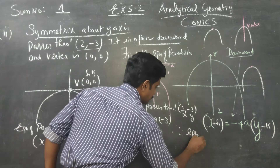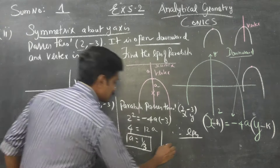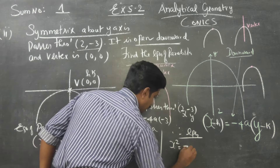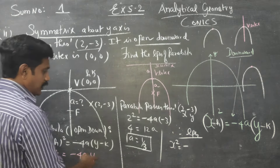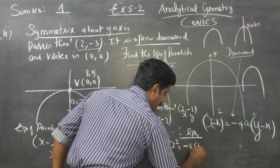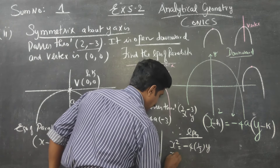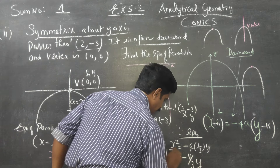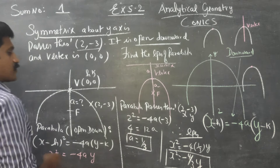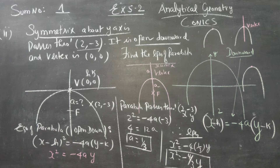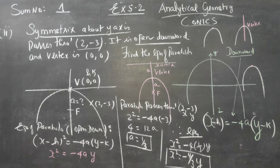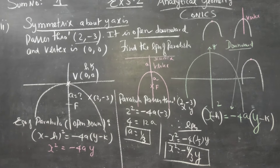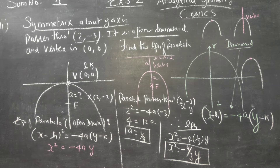Therefore, our equation of the parabola is: x squared equals minus 4 into (1 by 3) into y, which gives x squared equals minus 4 by 3 times y. This is the final answer for the equation of the parabola. Note that the value of 'a' must always be positive — it should never come out negative.